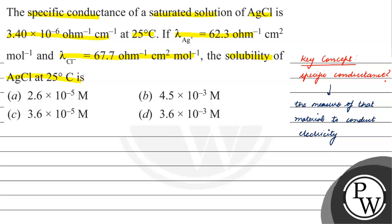That means, if the conductivity of something is higher, that material will be more conducting. If it is less, that material will be less conducting. It is represented by the letter Kappa.